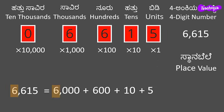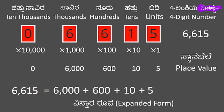We can observe that the digit 6 is in the thousands place and hence we have its place value as 6,000. The next place is hundreds and the digit is 6, so in the expanded form we have 600. The next place is tens and the digit is 1, so in the expanded form we have 10. The next place is units and the digit is 5, so in the expanded form we have 5. This is the expanded form of the number. The expanded form of the number is the sum of the place values of the digits in the number.